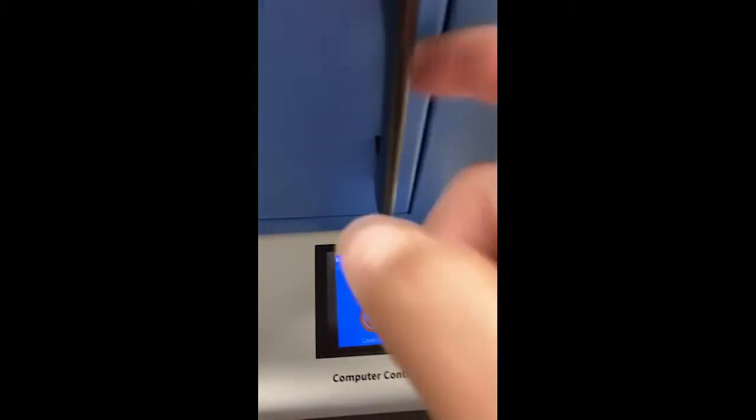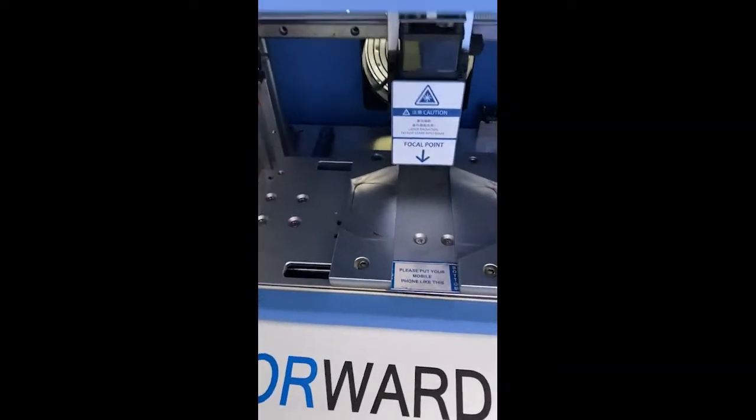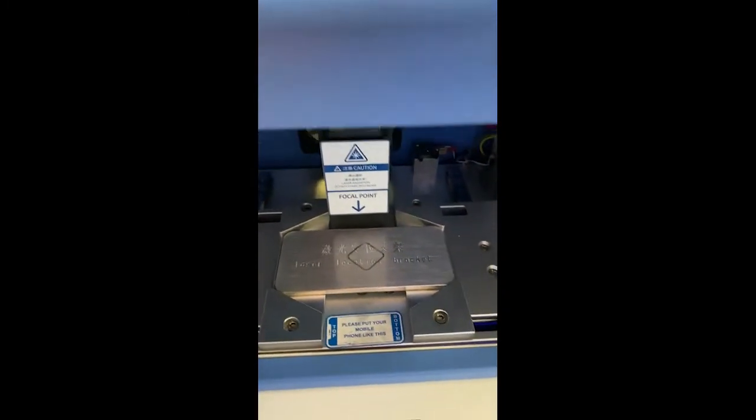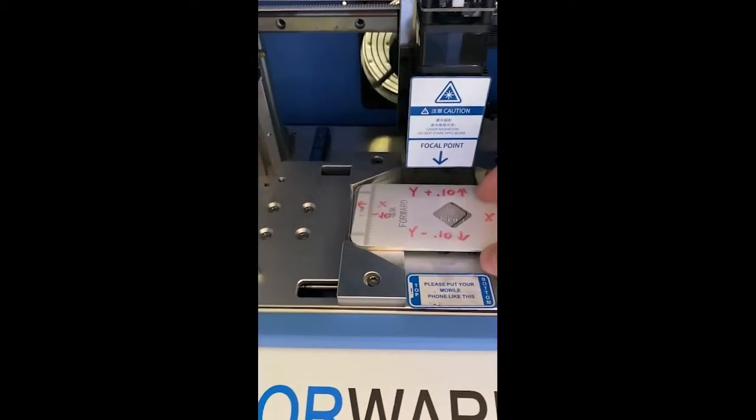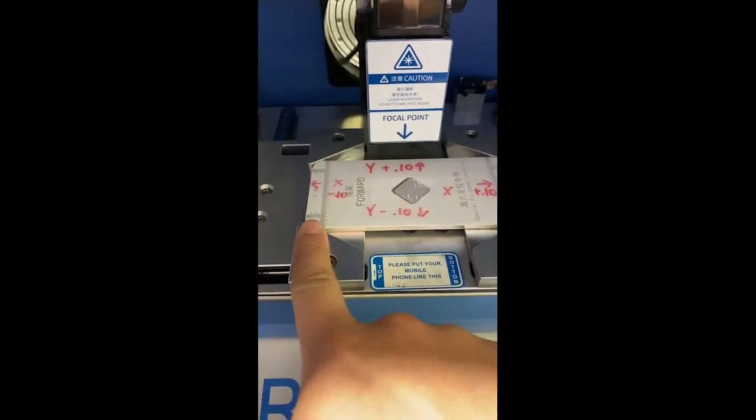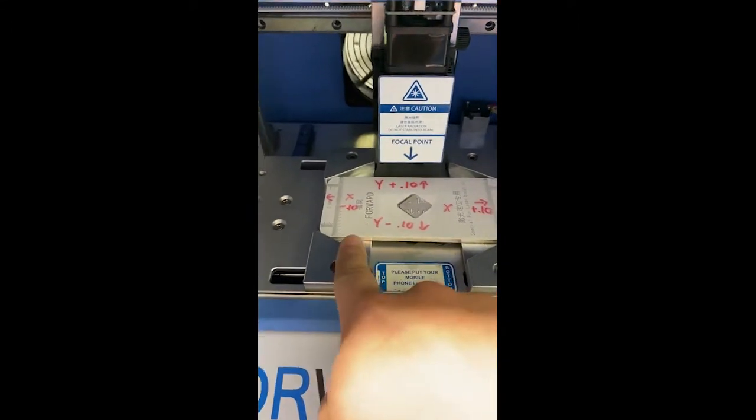All right. So now we're going to actually run the laser. Make sure you always put the bracket in there first. You can't just put this piece of glass in. If you do, it's going to cause some issues. You put your glass in, make sure that it is in this orientation with the word Forward on the left hand side.